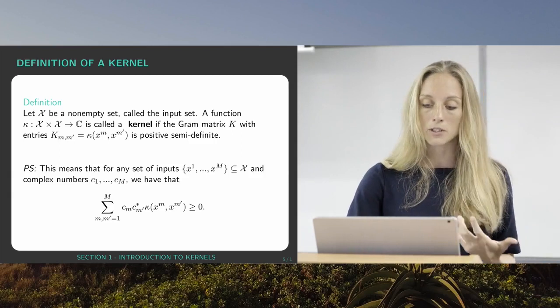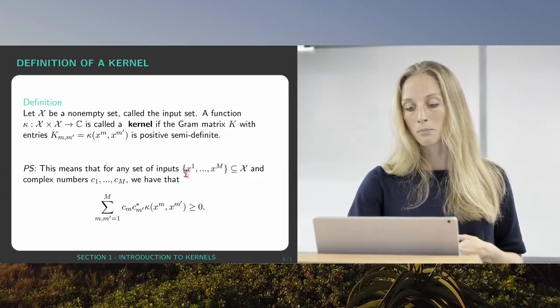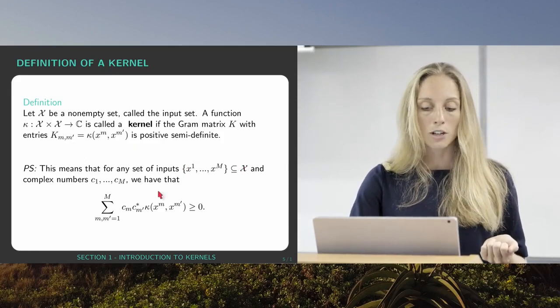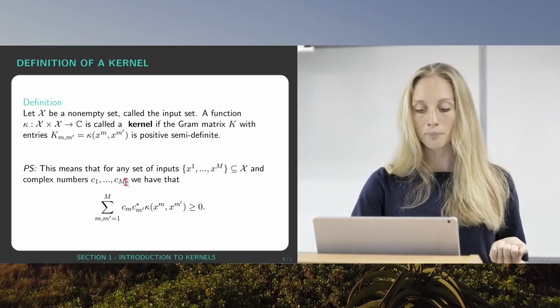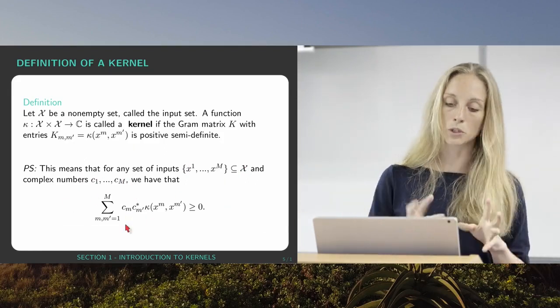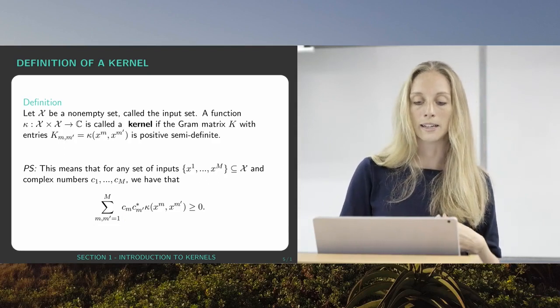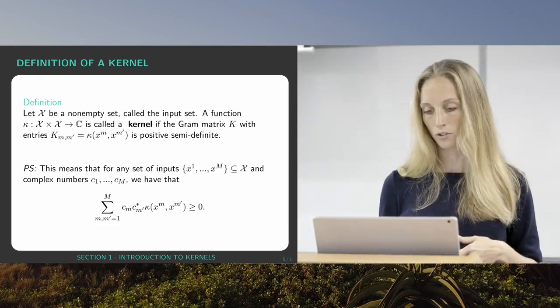Positive semi-definite matrices means that if I select m inputs from my input set and some arbitrary complex numbers c1 to cm, this equality here or inequality has to hold. And we use this just now to show why inner products of feature vectors are actually kernels.